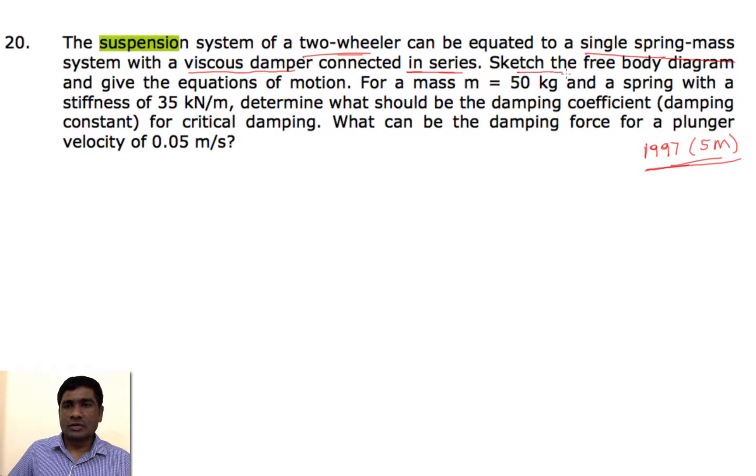We need to sketch the free body diagram. So this is the man sitting on the two-wheeler with a mass m, and this is the suspension system of the two-wheeler. Under this is connected to the damper in series, and everything is resting on the ground. This is a car and this is a seat.